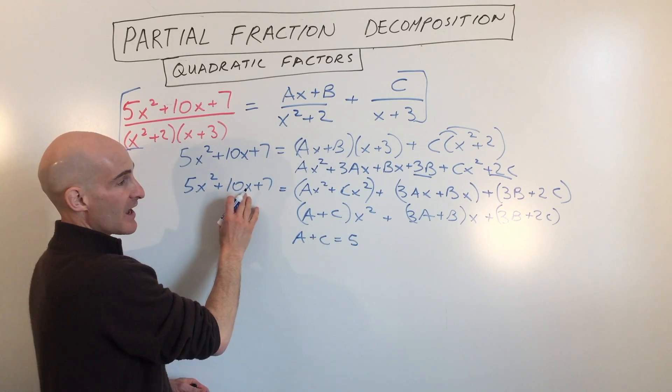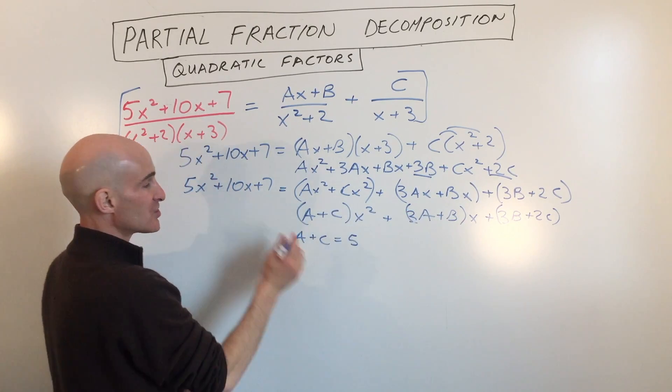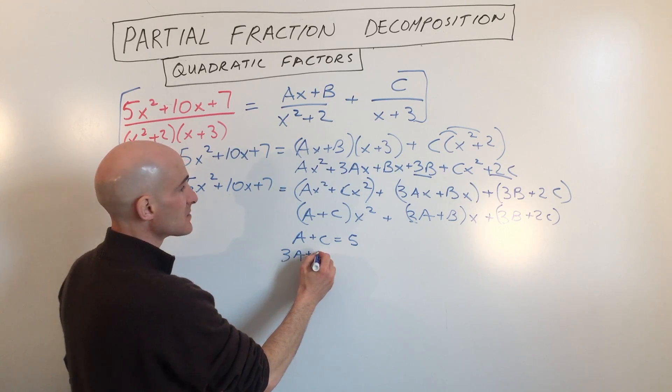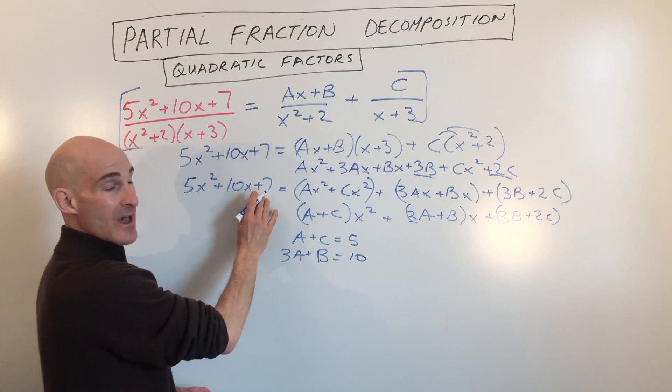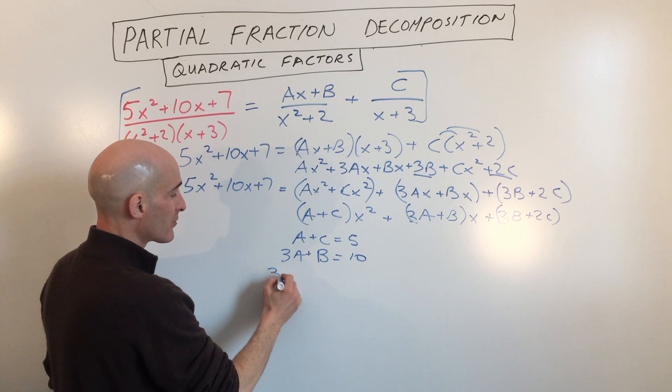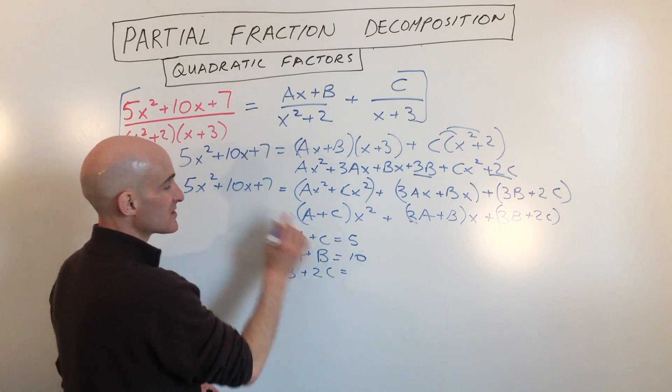We're going to set 10, see 10x. Here is x. We're going to set this coefficient equal to this coefficient. So we have 3a plus b equals 10. And then the constant 7, we're going to set equal to this constant on the right side, 3b plus 2c. So we have 3b plus 2c equals 7.